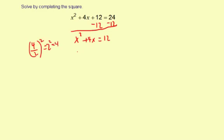So this needs to be x squared plus 4x plus 4, and then equals 12 plus 4 — add the 4 to both sides. Now I'm going to simplify. It's going to be x plus 2, quantity squared, equals 16.